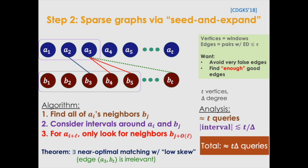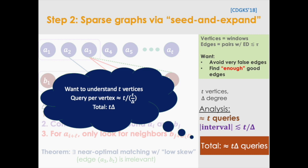Thus, since we want to understand t vertices and we can understand t over delta vertices in t queries, we have a total of t delta queries to solve this problem.